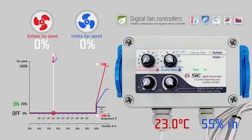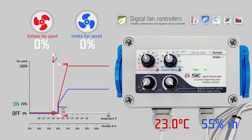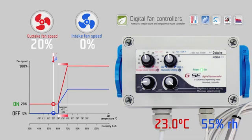On the temperature setting knob you set the desired temperature, for example 24 degrees Celsius. On the humidity setting knob you set the desired humidity, for example 60 percent relative humidity. On the third knob you set the minimum speed of the intake fan, which should never be undercut during regulation — for example, 20 percent. At the fourth knob you set the negative pressure setting of the outtake fan, for example minus 20 percent.